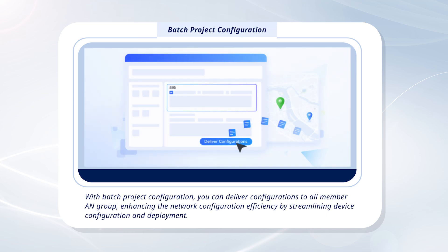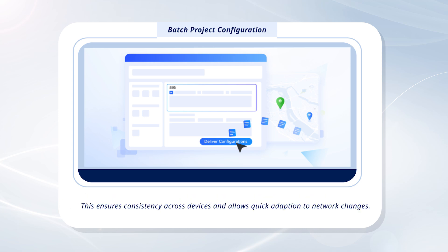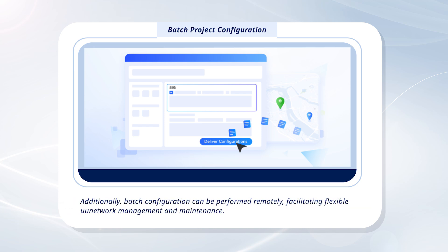With batch project configuration, you can deliver configurations to all member projects within an SD-WAN group, enhancing network configuration efficiency by streamlining device configuration and deployment. This ensures consistency across devices and allows quick adaptation to network changes. Additionally, batch configuration can be performed remotely, facilitating flexible network management and maintenance.